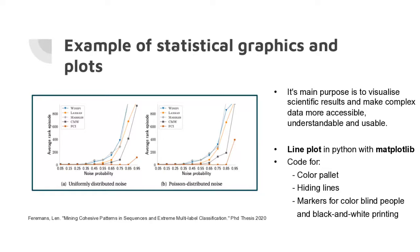I highlighted each method in the same color and hidden some lines to make the plot cleaner — the top and right grid lines are not shown. I also included little markers like a circle, triangle, and square. I included these markers because some people are colorblind, and academic papers are often printed in black and white, so you can still distinguish each method.